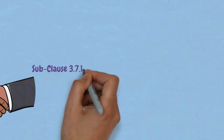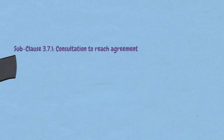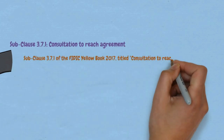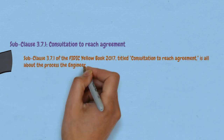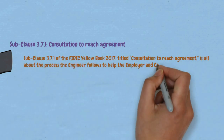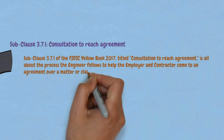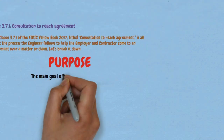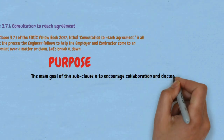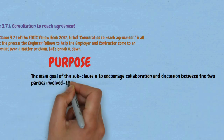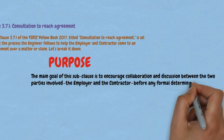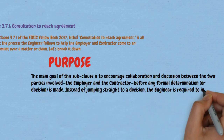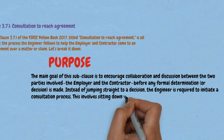Sub-clause 3.7.1, Consultation to Reach Agreement. Sub-clause 3.7.1 of the FIDIC Yellow Book 2017 is all about the process the engineer follows to help the employer and contractor come to an agreement over a matter or claim. The main goal of this sub-clause is to encourage collaboration and discussion between the two parties before any formal determination or decision is made. Instead of jumping straight to a decision, the engineer is required to initiate a consultation process.